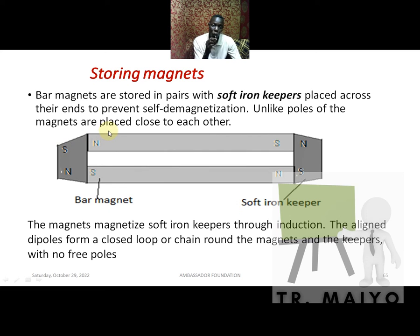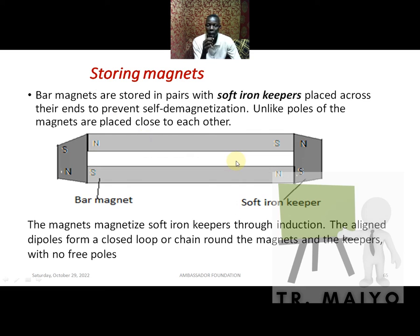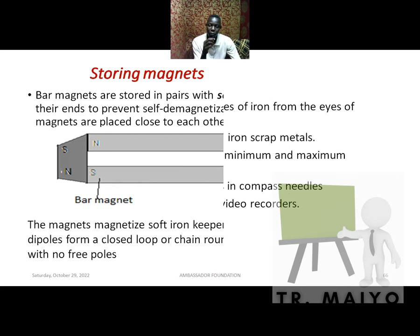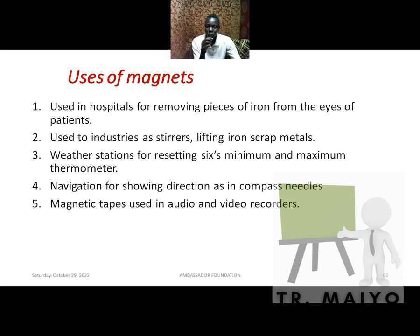To store a magnet properly, we use magnetic keepers. Magnets are stored in pairs with a non-magnetic material like a piece of wood placed between them, and with opposite polarities facing each other — south facing north. The keepers form a complete magnetic loop that controls self-demagnetization.